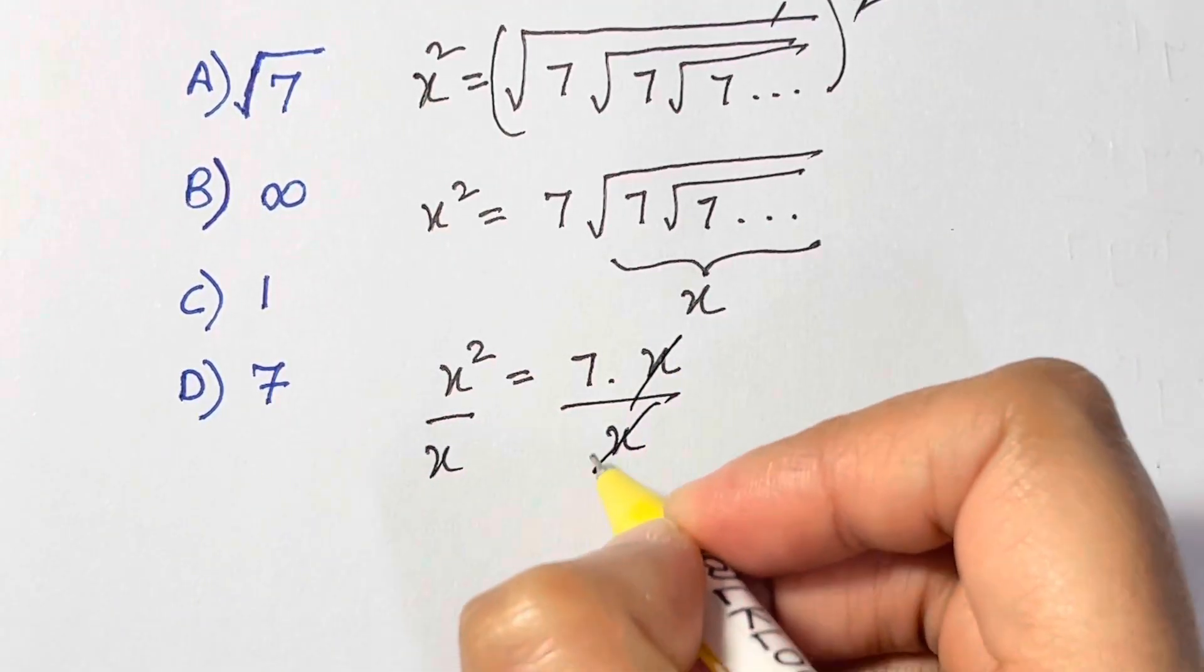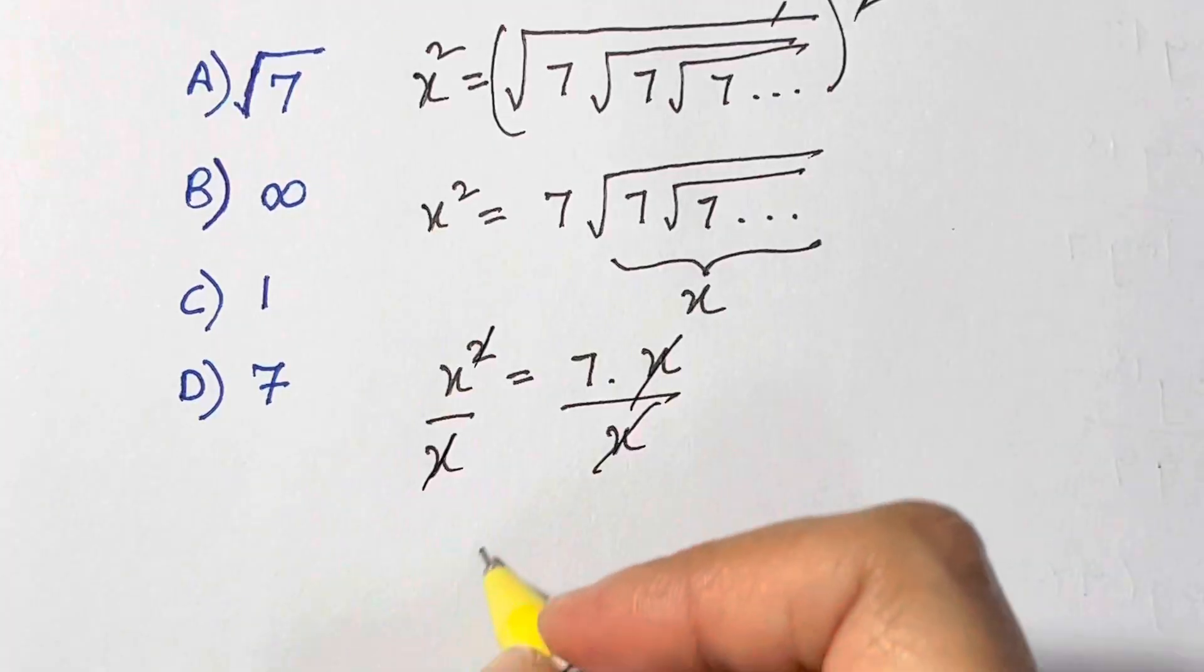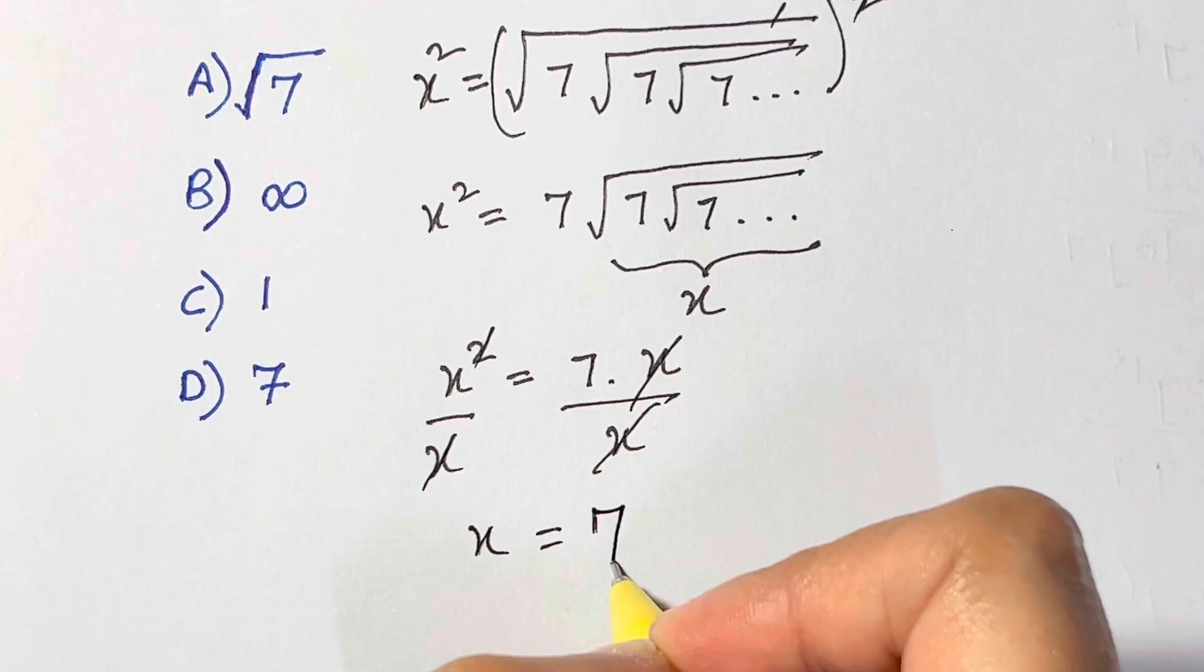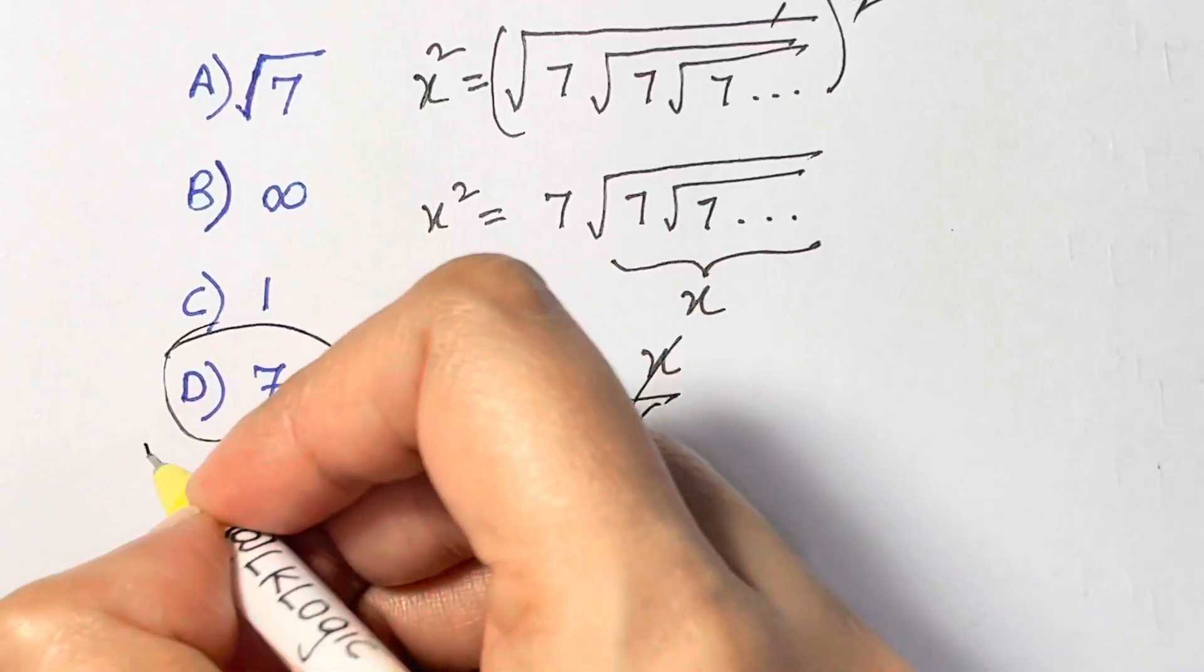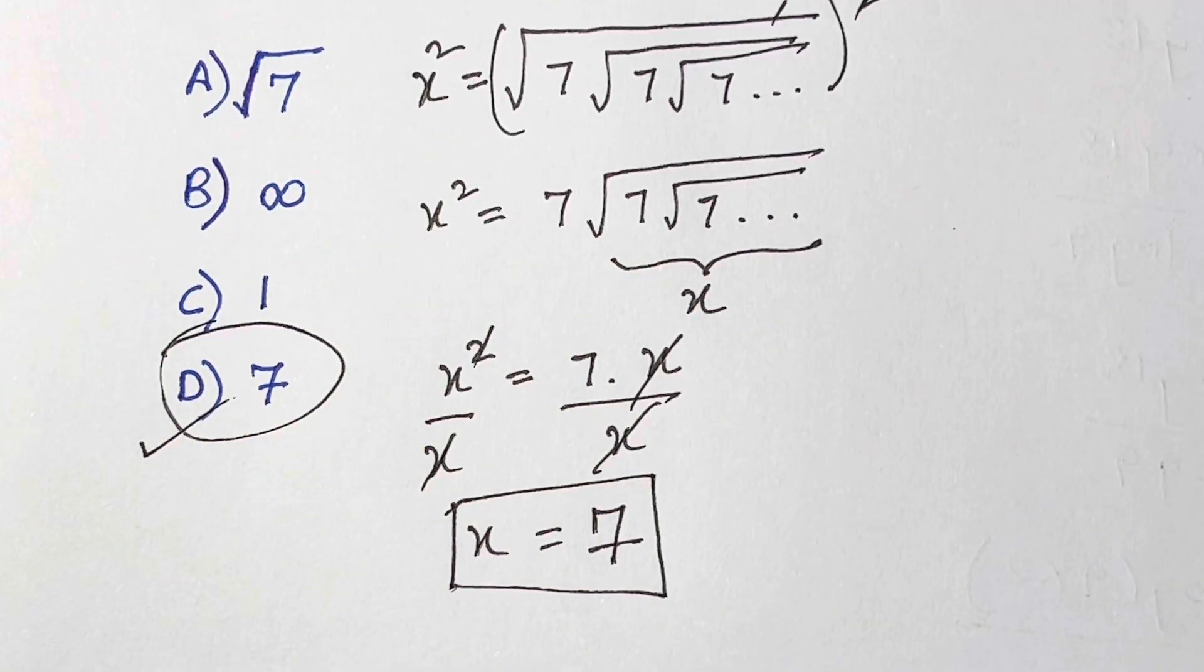So this and this gets eliminated, so x is equal to 7, and that's your answer. The solution is D, x is equal to 7. Hope you enjoyed it, thank you so much, bye bye, take care!